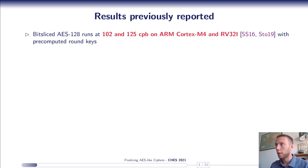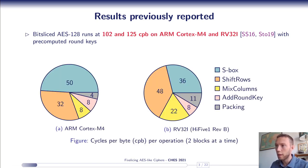If we have a look at the results previously reported in the literature for those platforms, we see that AES-128 runs around 100 cycles per byte. And if we have a deeper look on how the cycles are spent within the cipher, we see that many of them are spent for the shift rows operation, which is somewhat counterintuitive because the shift rows is maybe the simplest operation within the AES. It's just bytes reordering within the state. So let's first try to understand why it's so costly in a bitslice setting.